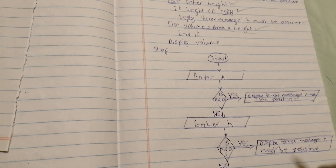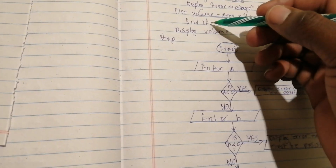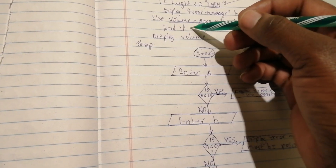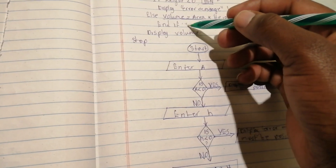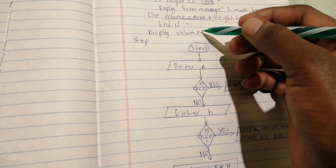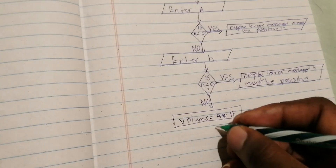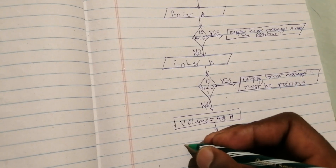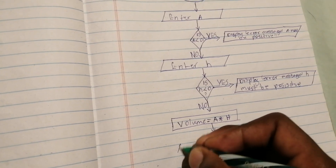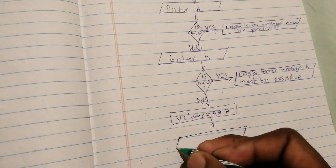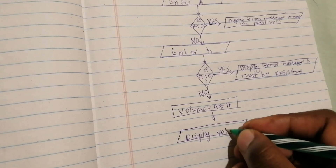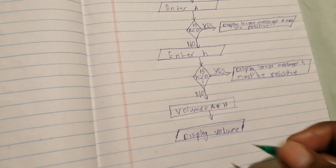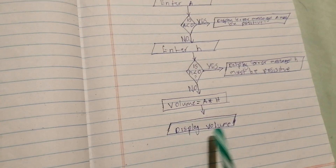We ignore the 'End If' instruction and move on to 'Display Volume'. Display is an output, so you draw a parallelogram and inside it write 'Display Volume'.